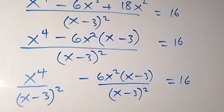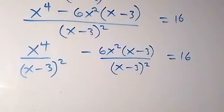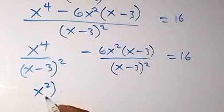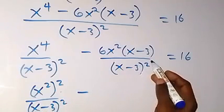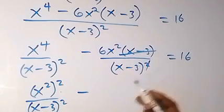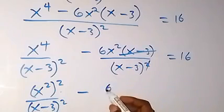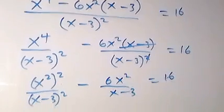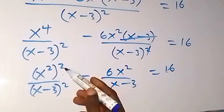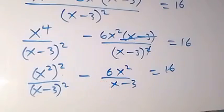From here, we can also write x⁴ as (x²)², divided by (x - 3)², and here we cancel one of the powers. Then we have minus 6x² over (x - 3), which is equal to 16. The square is separated out.